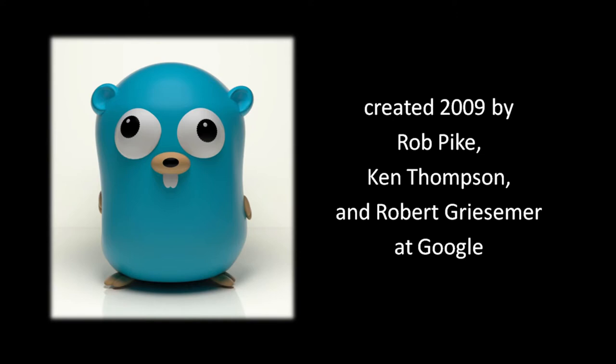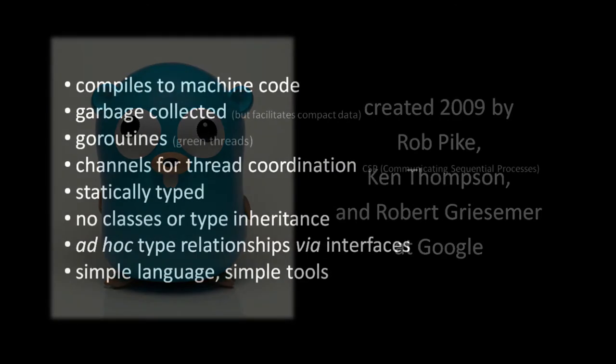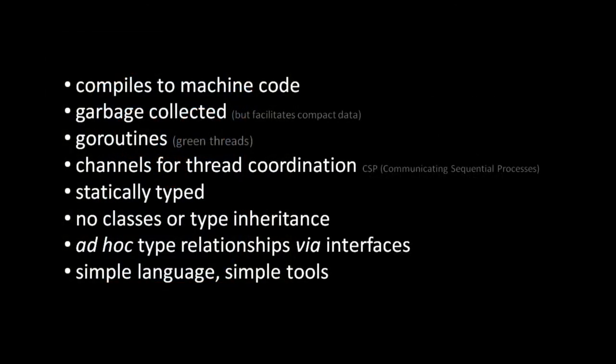Go is quite young, first released publicly in late 2009. The primary three authors of the language are Rob Pike, Ken Thompson, and Robert Griesemer, all developers at Google. Both Rob Pike and Ken Thompson were previously well known for their involvement in the development of Unix, and Thompson was one of the primary authors of the C language. In many ways, Go is targeted as a successor to C and C++, but Go is a higher level language.